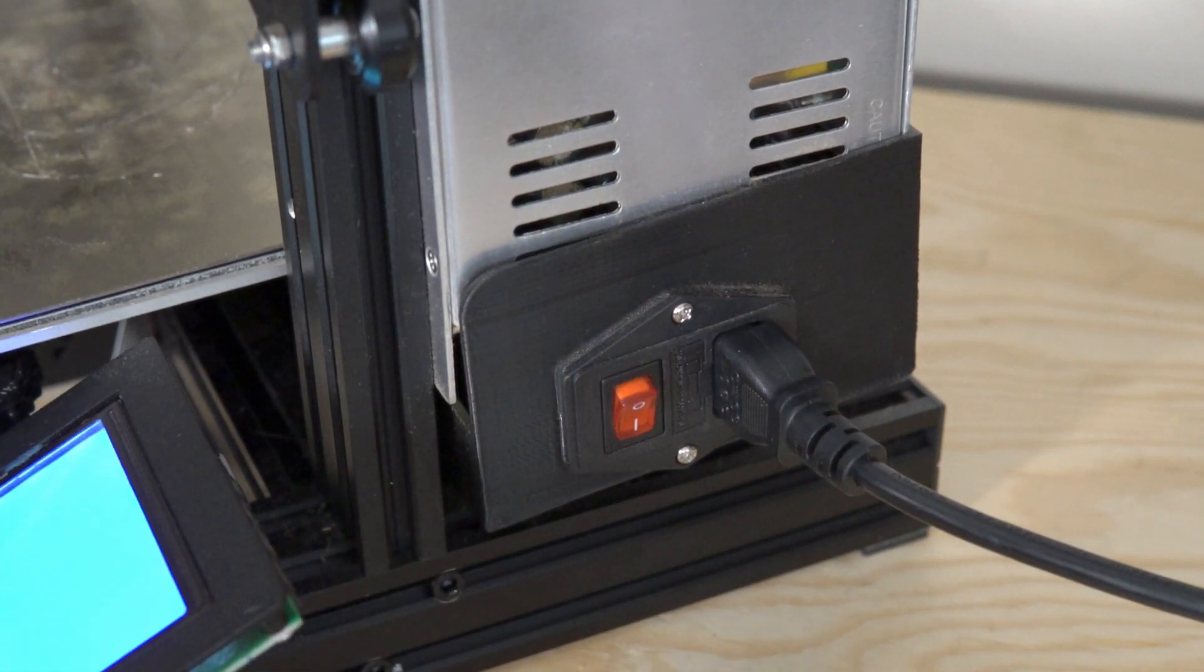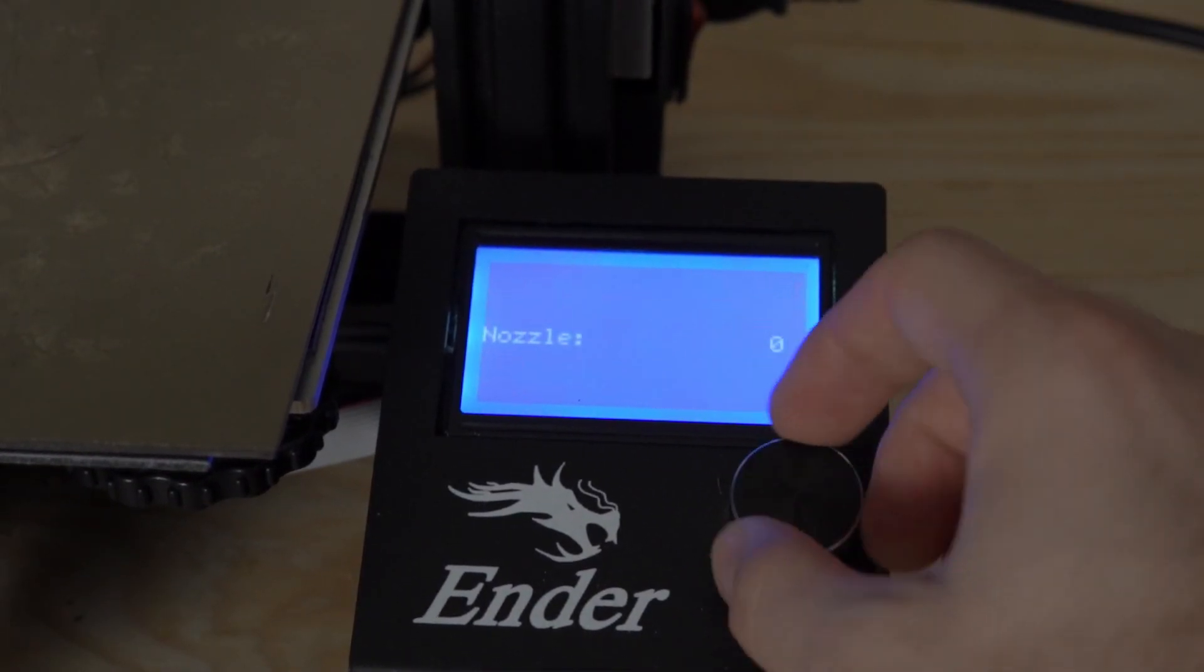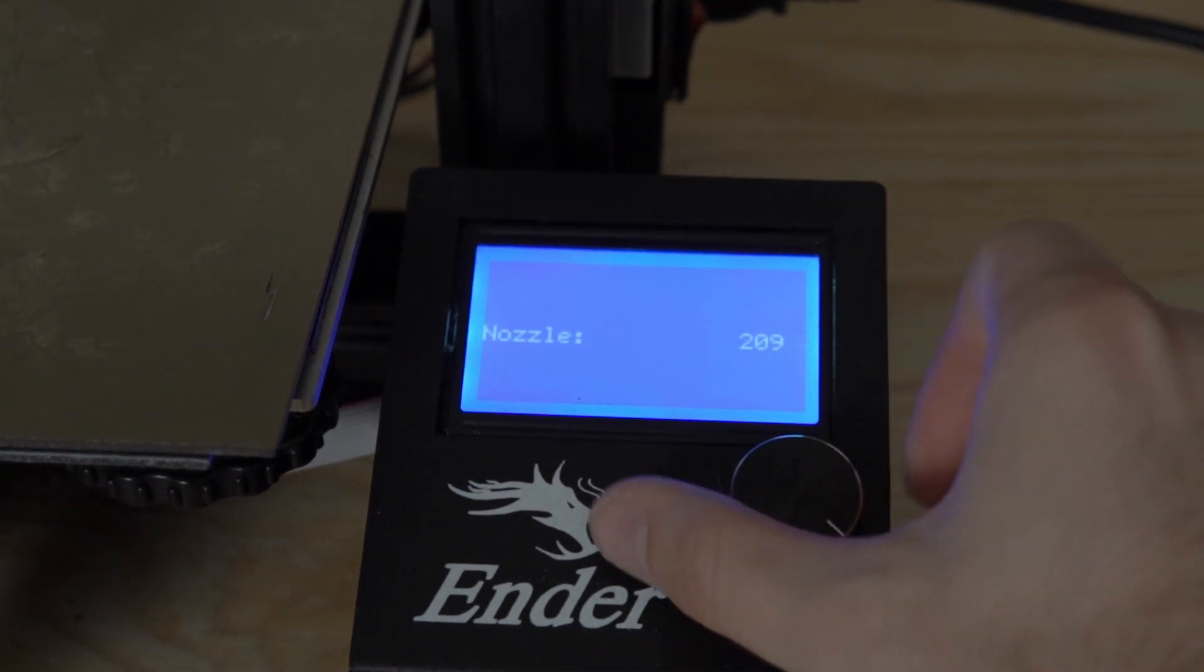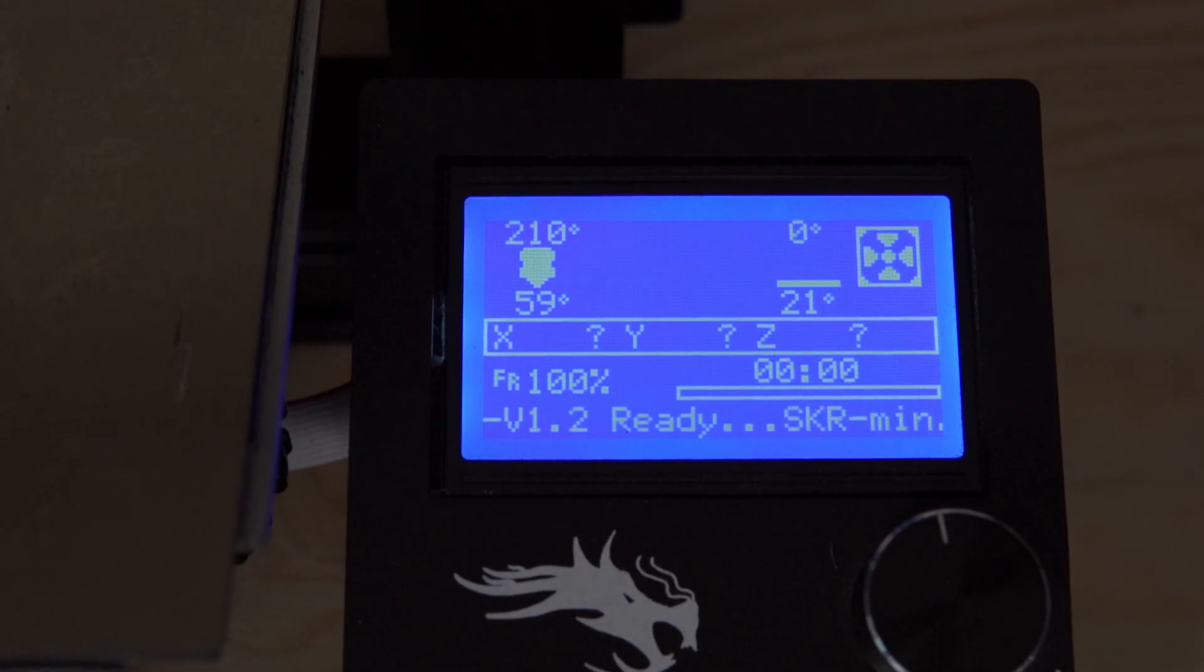Once done with that, turn on your 3D printer. Navigate to the temperature and set your hot end to whatever you'd use for PLA. In this instance I'm using 210. Wait for that to heat up, or if you're editing, use editing magic to quickly get to temperature.